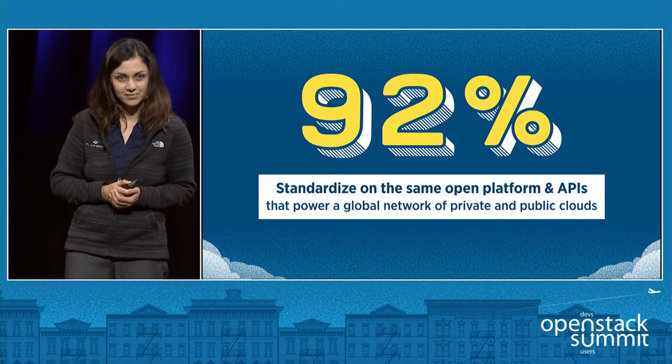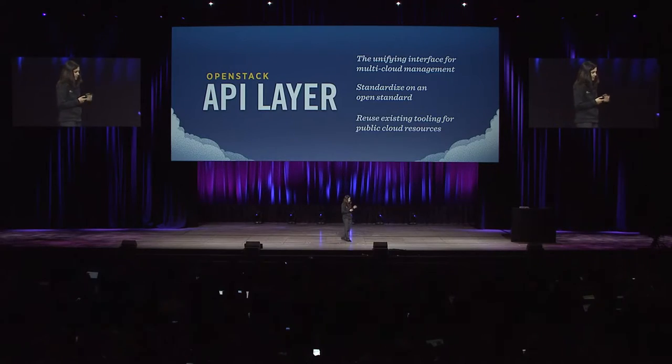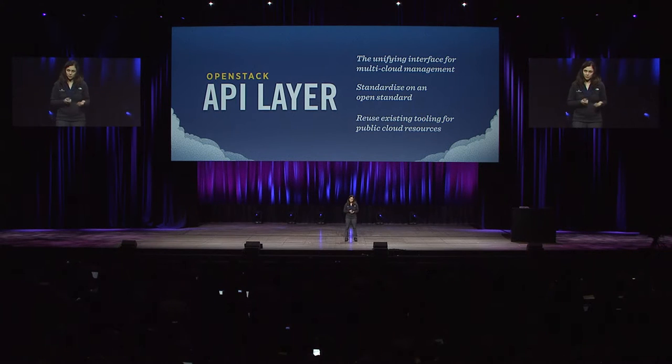Pretty powerful. So the question that we asked — the experiment that we ran — is: what if we could use OpenStack, the most powerful and popular open source framework for managing cloud infrastructure, to manage and control not just private deployments or endpoints, but also the most popular public clouds of the world, such as Azure, AWS, or GCE? In other words, transforming the OpenStack API layer to be the single unifying interface for multi-cloud management.